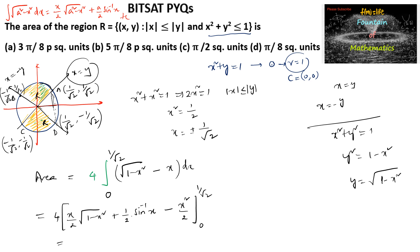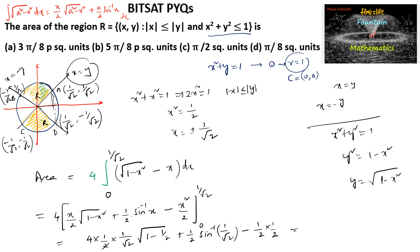Substituting the limits: 4 times {(1/2)(1/√2)√(1 - 1/2) + (1/2) sin⁻¹(1/√2) - (1/2)(1/2)}. Simplifying: 2/√2 = √2, then 2 × (1/√2) = 1/... plus (1/2)(π/4) minus 1/4.